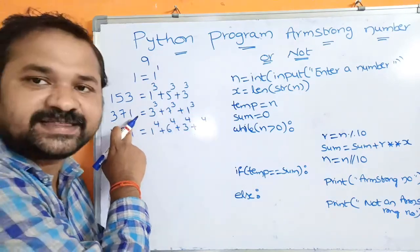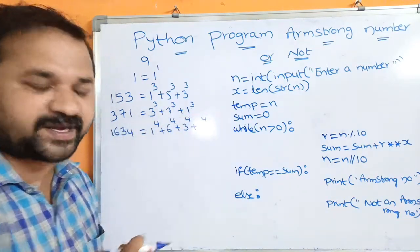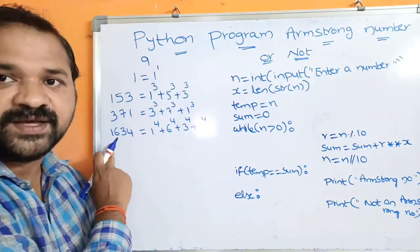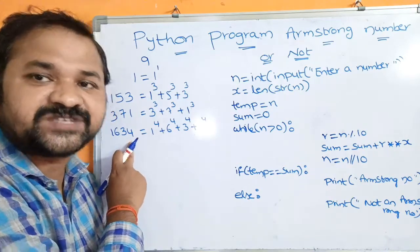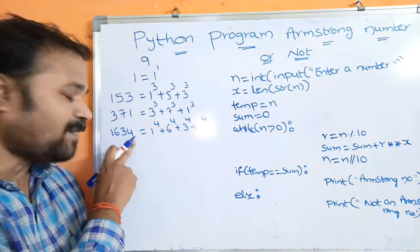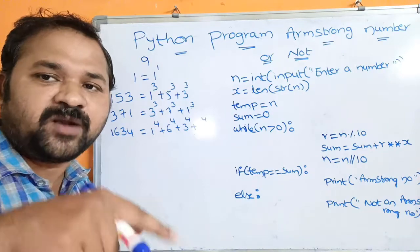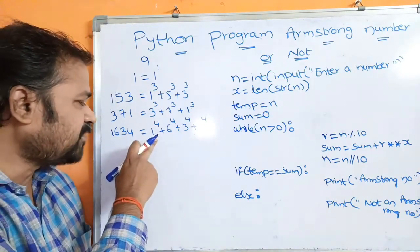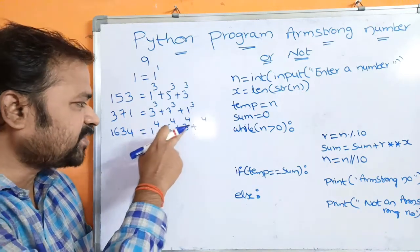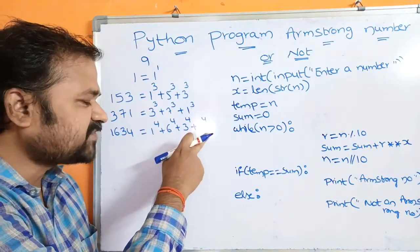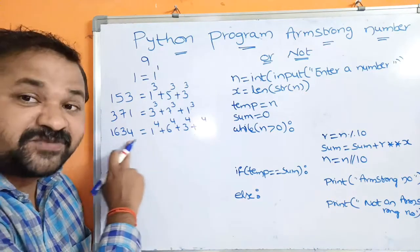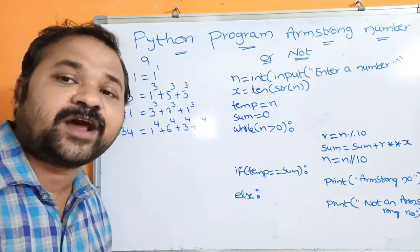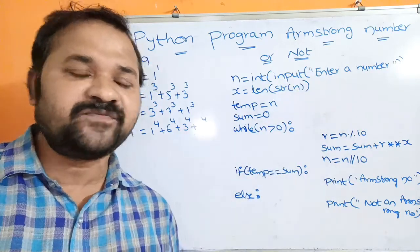If you take 1634, it is also an Armstrong number because 1634 contains 4 digits. So we perform power 4 operation on each digit: 1 power 4 plus 6 power 4 plus 3 power 4 plus 4 power 4 equals 1634 only. That's why 1634 is an Armstrong number.